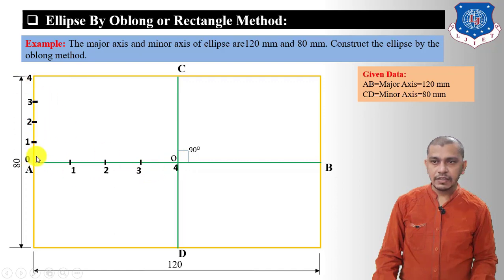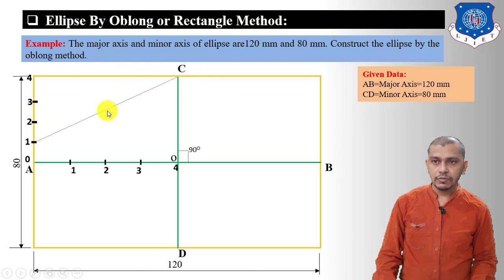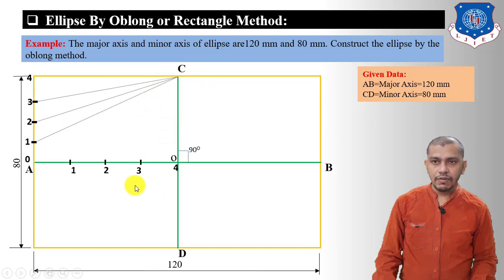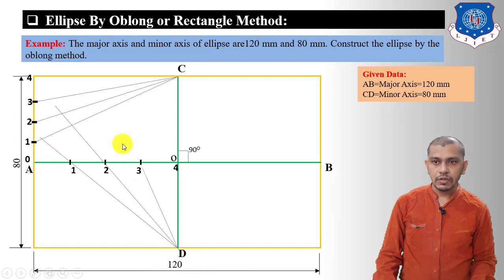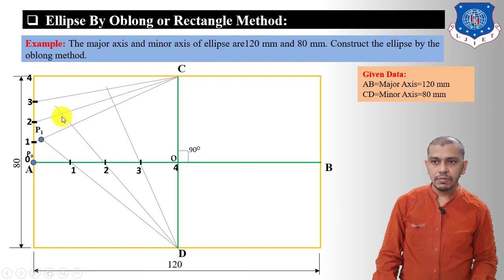After dividing the lines into equal number of divisions, connect these points to point C and draw lines — 1C, 2C, 3C. Also connect the points on the top to C and draw those lines. Mark the intersection points: this will be P0, P1, P2, P3, and P4.